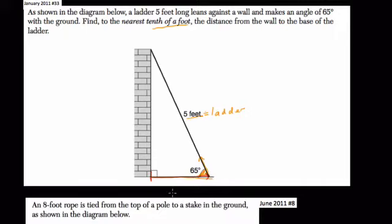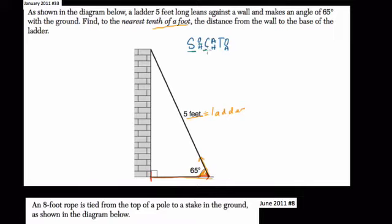What we're going to do is use our trig ratios — that's the sine, cosine, and tangent. Our acronym is SOH-CAH-TOA. It helps you remember the ratios: sine is the ratio of the opposite over hypotenuse, cosine of an angle is equal to the adjacent over the hypotenuse, and the tangent of an angle is the opposite over adjacent.